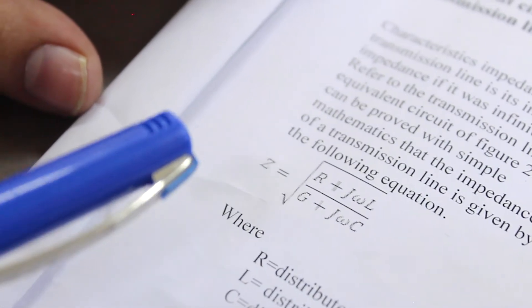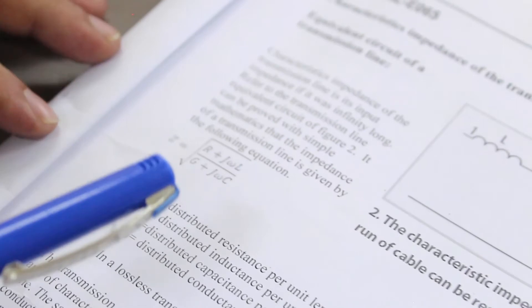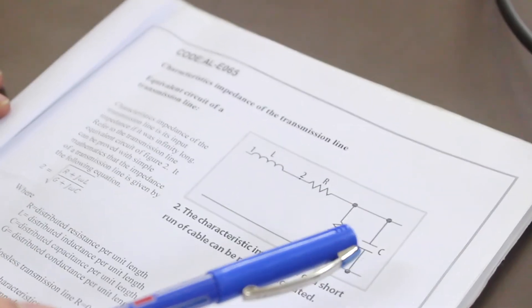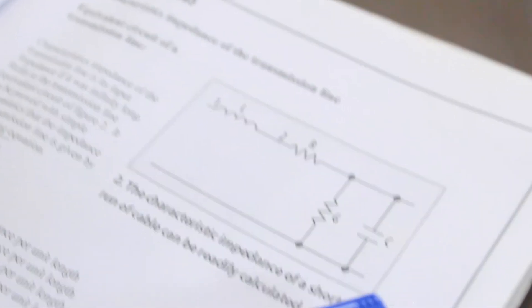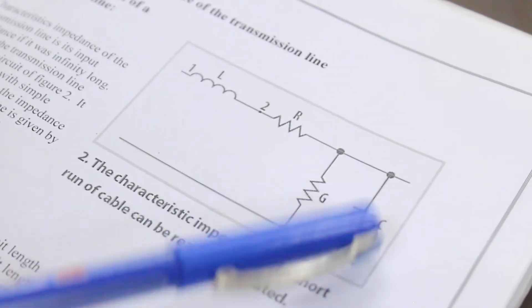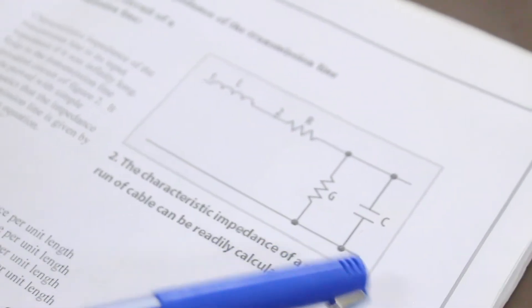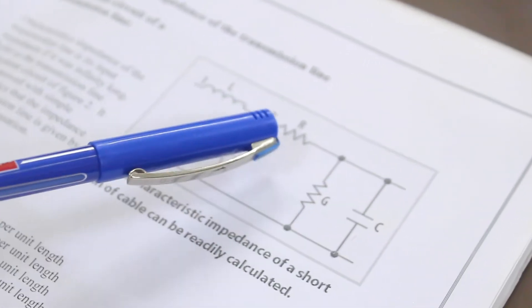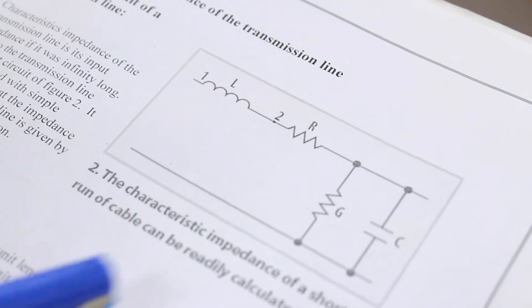We cannot calculate all the four values at the same instant. What we do first is make it open circuit at the load end and what we get is the value of G and C. Again when the load end is short circuited, what we get is the values of R and L.